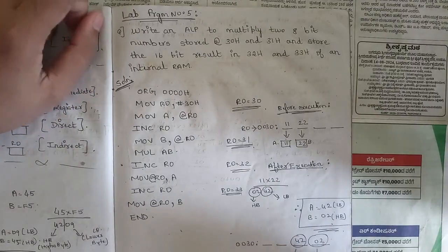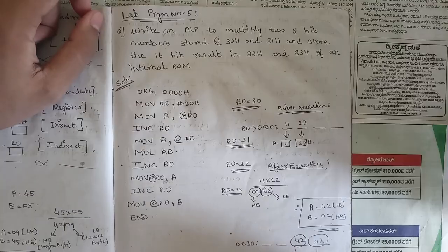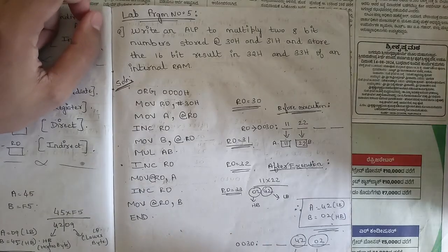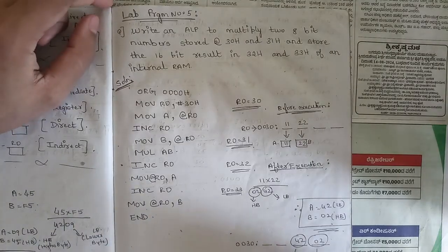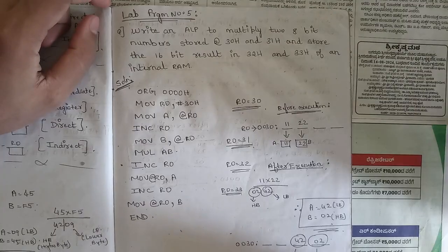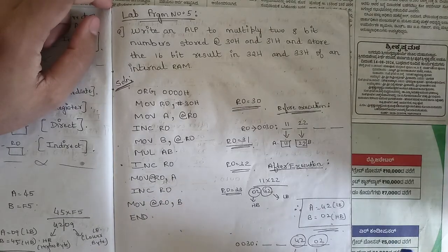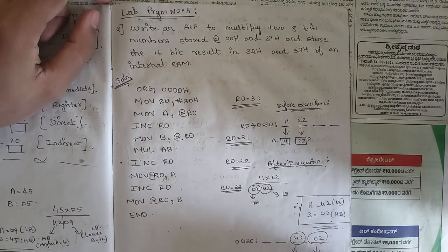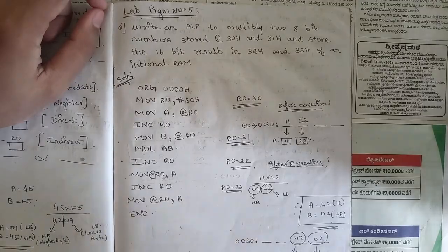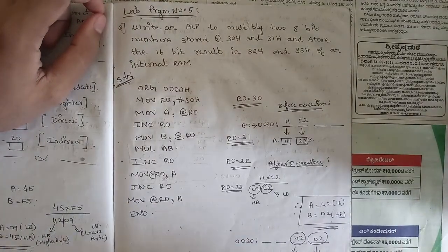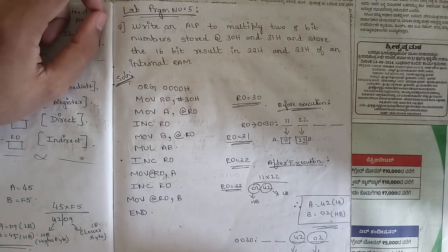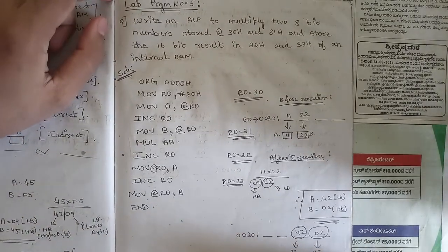Hello everyone. Today in this video we are going to discuss the next exam topic — microcontrollers — specifically some important arithmetic logic programs, assembly level programs (ALP programs). Along with that we are going to discuss some C programs from modules 4 and 5. From all the modules, some important assembly language programs we are going to see, which you need to be studying before entering the exam.